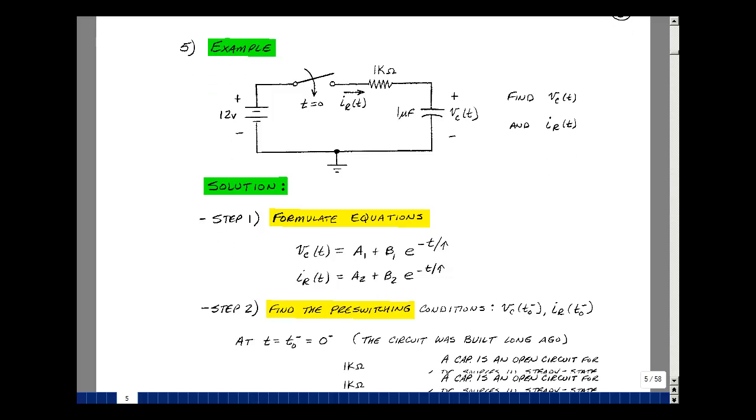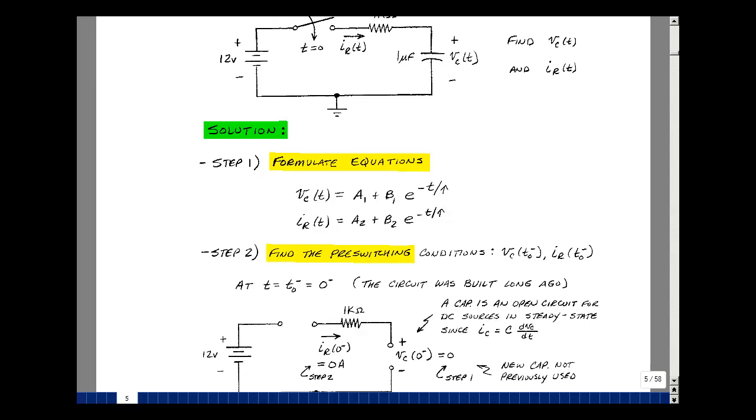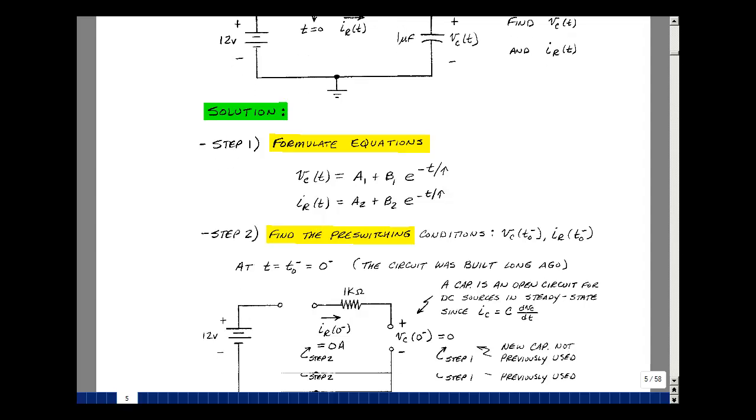My time is T0 equal to 0, so I'm just going to have e to the minus T over tau. These equations have tau in common, but A1 and B1, A2 and B2 are the four constants I need to solve for. Now I want to graph these variables really for all time. I need to know what's the value of the voltage across the capacitance and the current through the resistance just before we flip the switch. Time T equals T0 minus, in this case, just before 0. Let's draw what our circuit looks like.